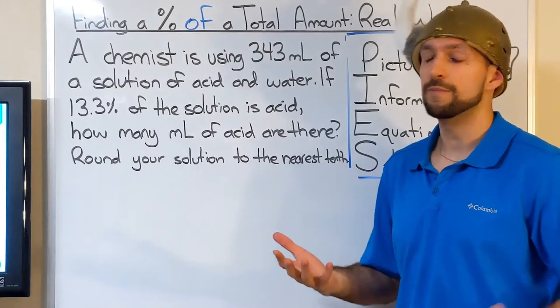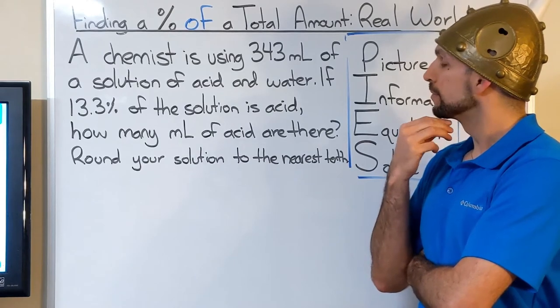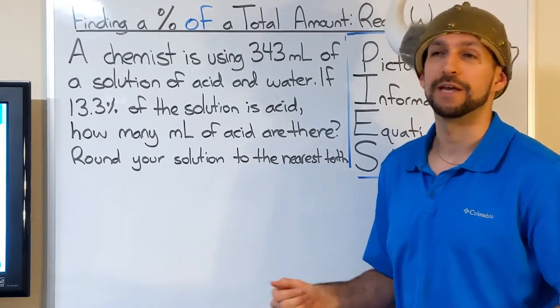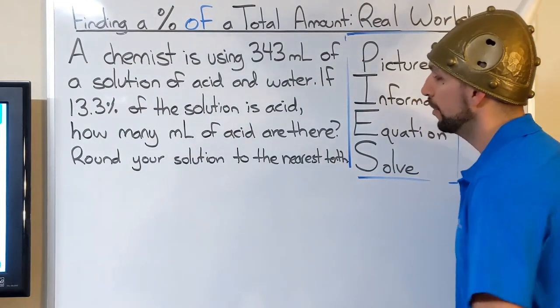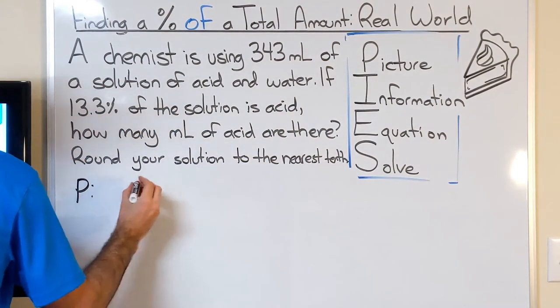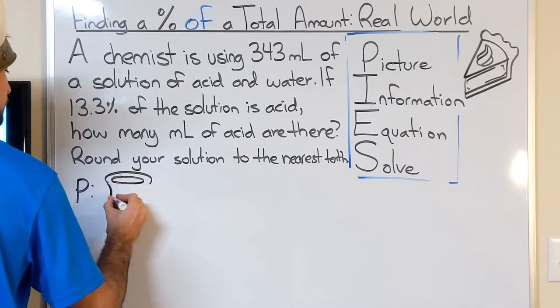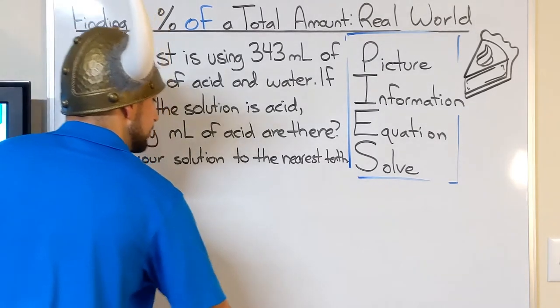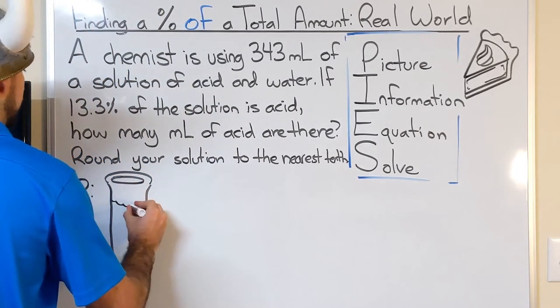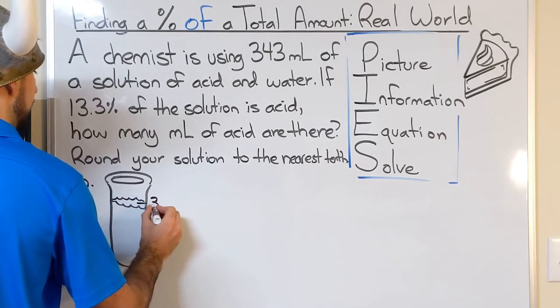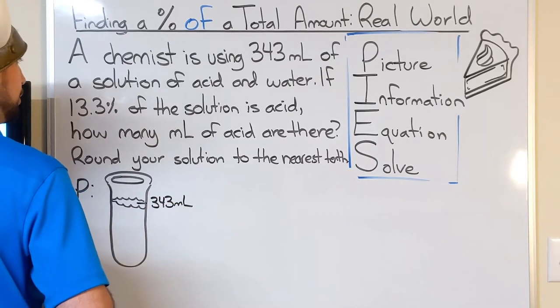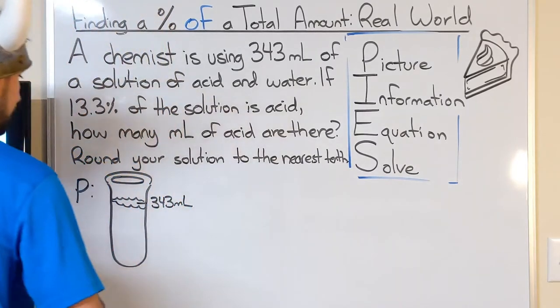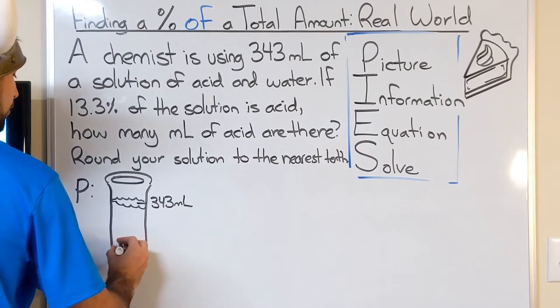Let's do another problem. For our second problem, we have a mixture of acid and water. So this chemist has a vessel of some sort. It's not very big, it's only 343 milliliters. So let's first, before we do any of the math, represent that with a picture. So we're going to start our PIES process. The picture, I'm going to draw a beaker. And this has 343 milliliters of solution in it. Now, 13.3% of the solution is acid, so not all of this is acid. So if this is 100% of the solution, 13.3% would only be around here.